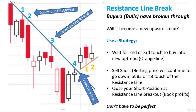Another way things can happen is a resistance line breaks — the buyers or bulls have broken through. We're on a deep downward trend and it's been broken through. You can see the downtrend here on this image is established — on the second or third touch, and even at the fourth touch, it's still part of a downtrend. The question is, will it become a new uptrend once it's broken through? Is this a false signal? The strategy around this on a resistance line break: it's been in a downtrend, it's broken through — so wait for the second or third touch to buy into the new uptrend. That's the orange line there. Since we're coming out of a really steep downtrend, it might be safer to wait for a third confirming touch just to be sure.